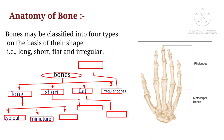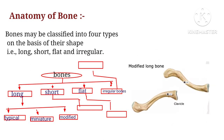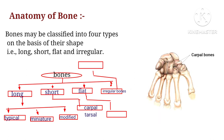Short long bones, also called miniature long bones, have only one epiphysis. Examples are phalanges, metatarsals, and metacarpals. Then there are modified long bones, in which the medullary cavity is absent — unlike typical long bones which have a medullary cavity. The clavicle is an example of a modified long bone.